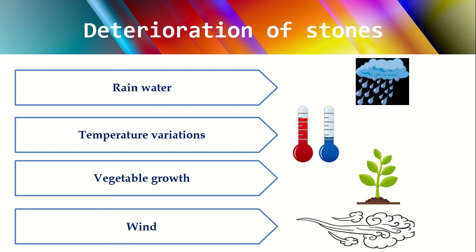Next is wind. Wind generally contains fine particles of dust, and when wind blows at high velocity, these particles strike the stone with great force, causing decay. Wind also allows rain water to enter into the pores of the stone with some force, and hence freezing and thawing will take place, causing the stone to start splitting. These are all the causes or agents which cause deterioration of stones.